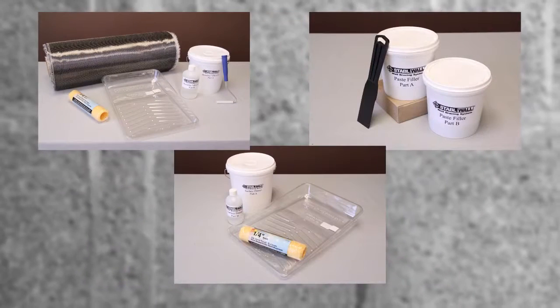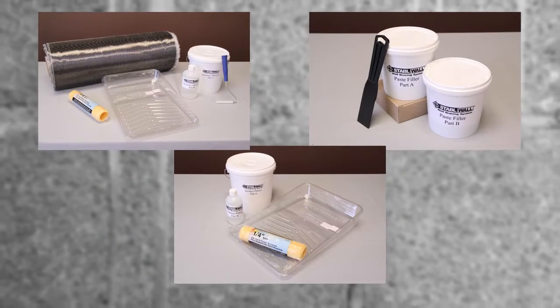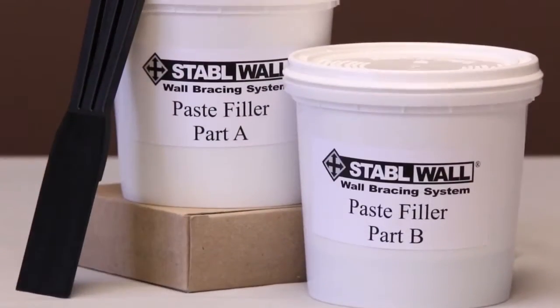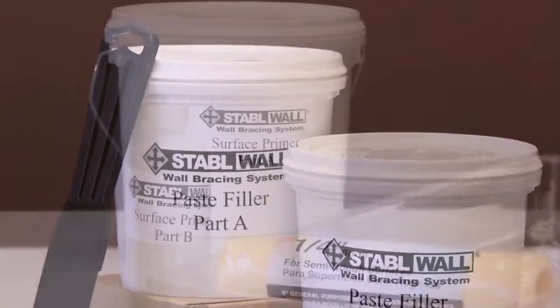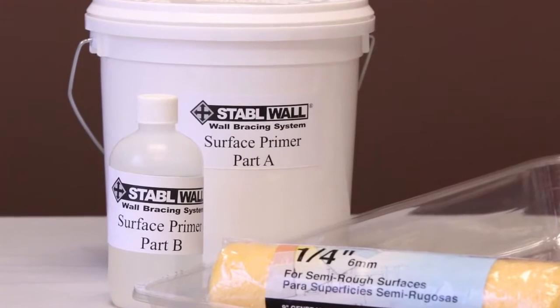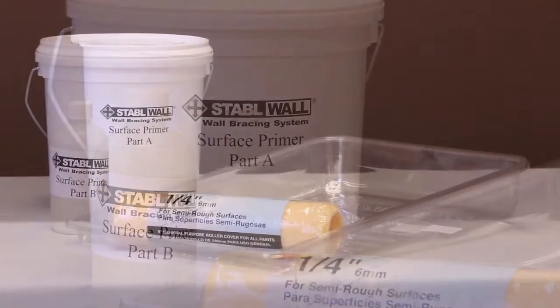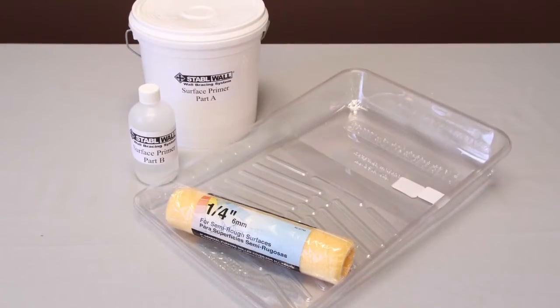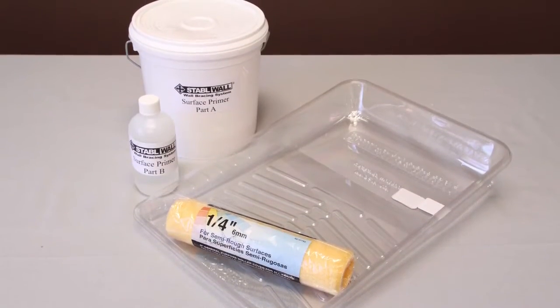Divide the materials into three groups. Your first group consists of your paste filler. Set the paste filler parts A and B in the first group along with a putty knife. Your second group consists of your surface primer parts A and B. You'll be applying them with one of your quarter-inch nap roller covers. Place these together with one of the included disposable roller pan inserts.